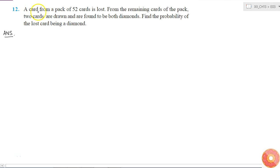The question says that a card from a pack of 52 cards is lost, and from the remaining cards of the pack, two cards are drawn and are found to be both diamonds. Find the probability of the lost card being a diamond.